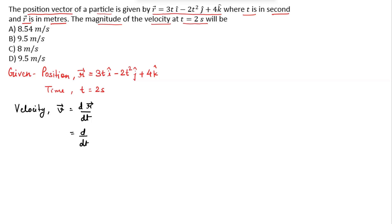Now, substituting the value for position 3t i cap minus 2t squared j cap plus 4k cap. Now, 3 is the constant. Differentiation of t gives 1 i cap minus 2 is constant. Differentiation of t squared gives 2t with j cap plus differentiation of 4 gives 0. Now, we get the velocity vector equals 3 i cap minus 4t j cap. This is the value for velocity.